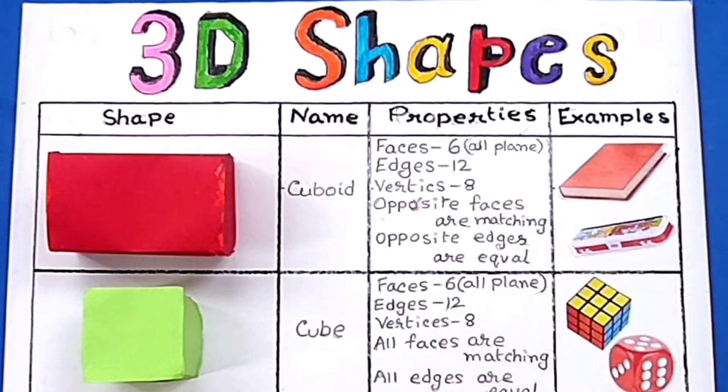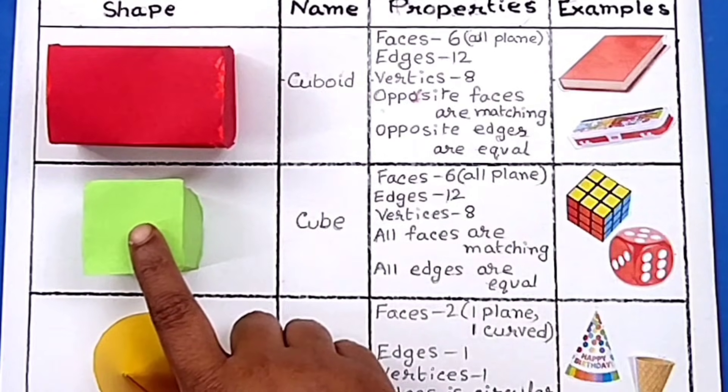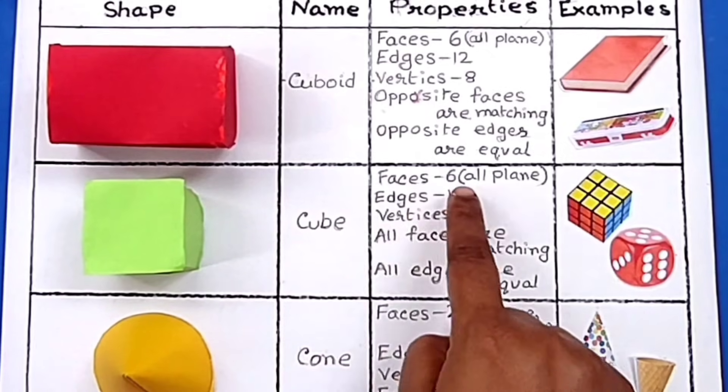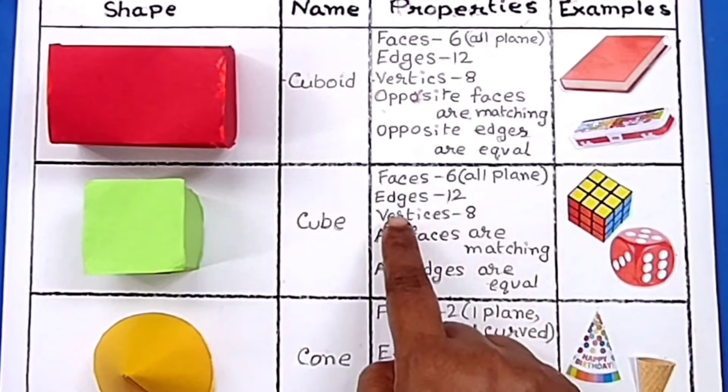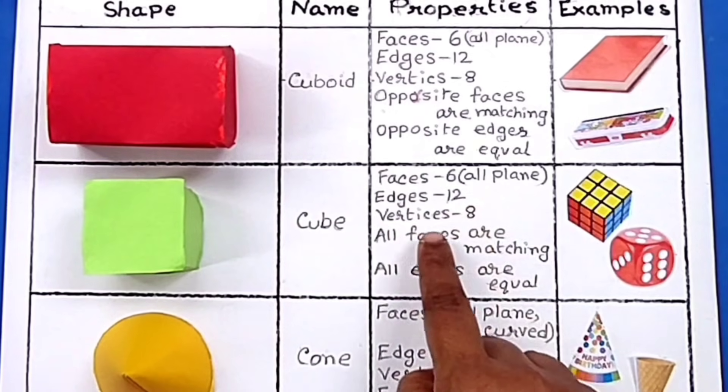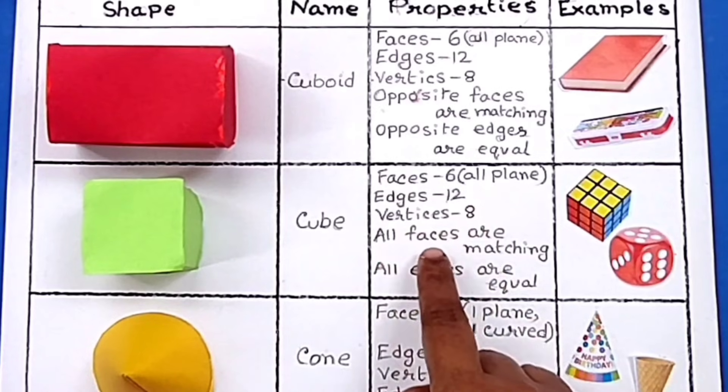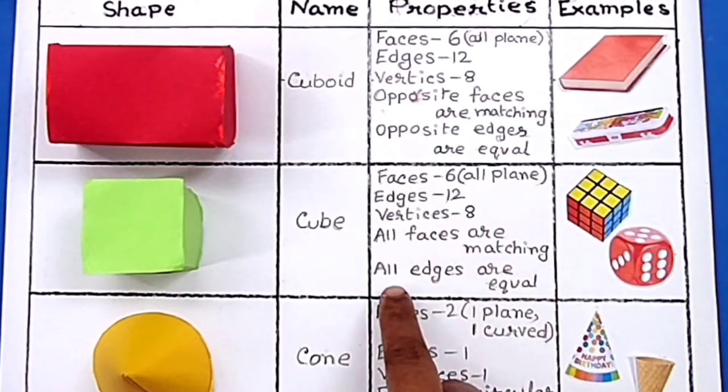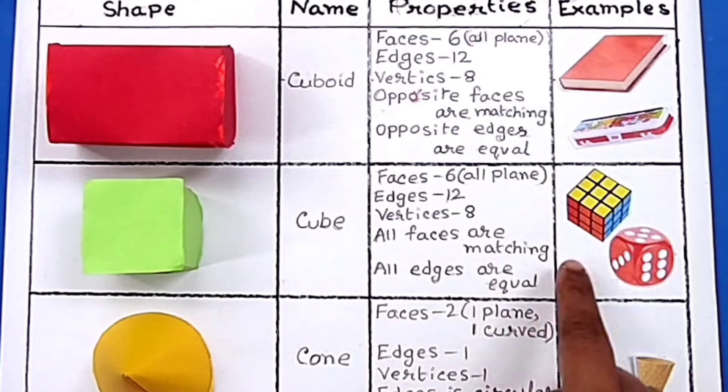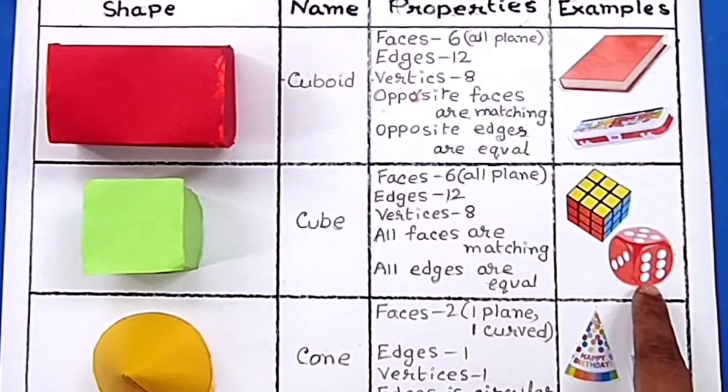Examples are book and pencil box. The name of this shape is cube and the properties are: faces 6, all are plain; edges 12; vertices 8; all faces are matching; all edges are equal. Examples are Rubik's cube and dice.